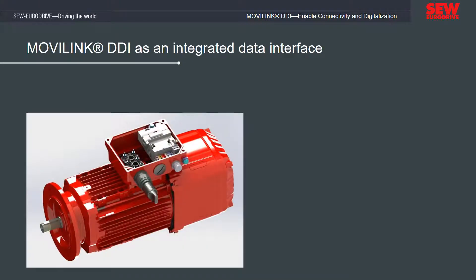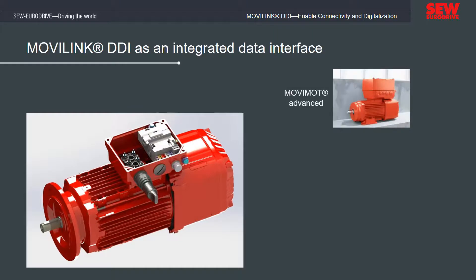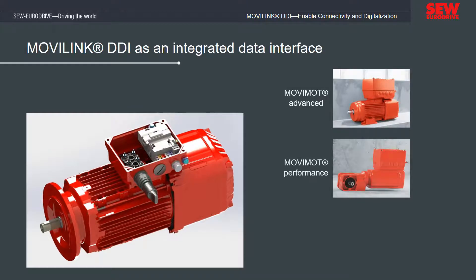Movilink DDI is not only used as single cable technology between decentralized inverters and motors, but also as an internal data interface for motors with an integrated inverter. Examples are the MOVI-MOD Advanced, MOVI-MOD Performance, and MOVI-GEAR Performance.